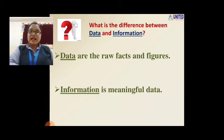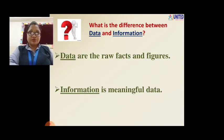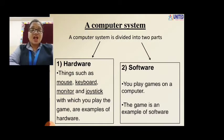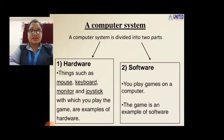So, data are the raw facts and figures, and information is meaningful data. Now let us see about the computer system. A computer system is divided into two parts. The first one is hardware — H-A-R-D-W-A-R-E, hardware. And the second one is software — S-O-F-T-W-A-R-E, software. So which are the two parts of a computer system? Hardware and software.